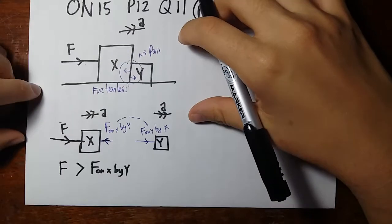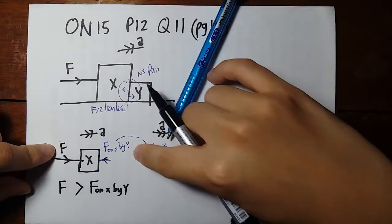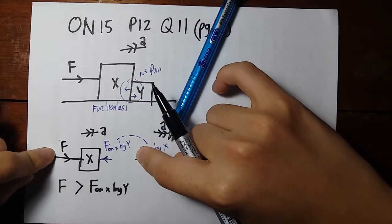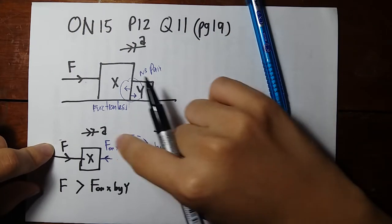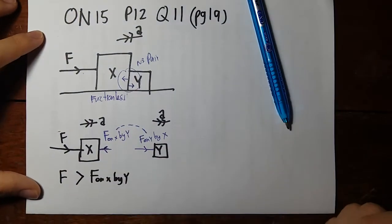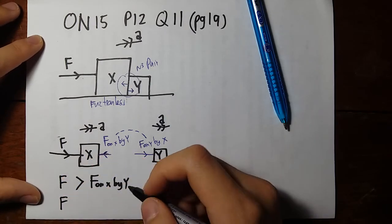So if we just now said this main force is bigger than this, so this should also be bigger than this other force right here because they're the same. So the second conclusion you can draw is the force that you're pushing both blocks is also bigger than the force on Y by X.